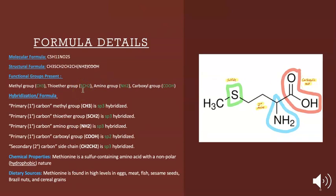Formula details: as you can see on the right hand side I provided a picture of methionine with only three of the functional groups present, however we do have a thioether and a methyl group present as well. On the top we have the molecular formula followed by the structural formula and then our functional groups present: methyl group, thioether group, amino group, and carboxyl group.